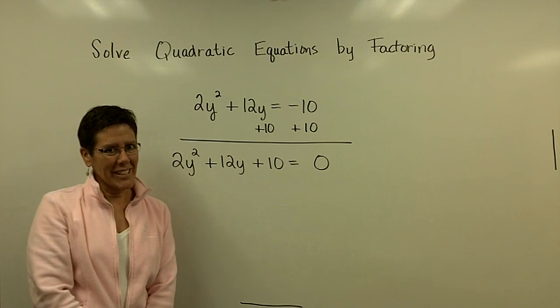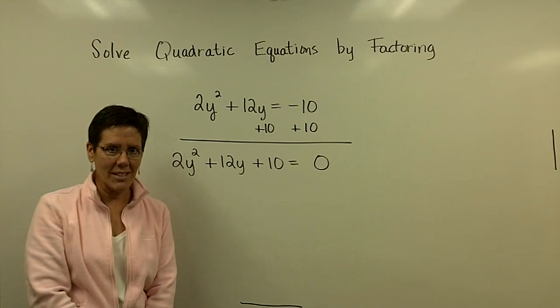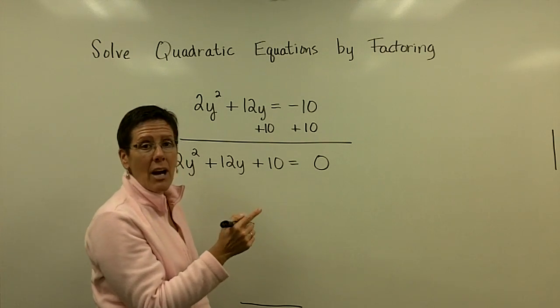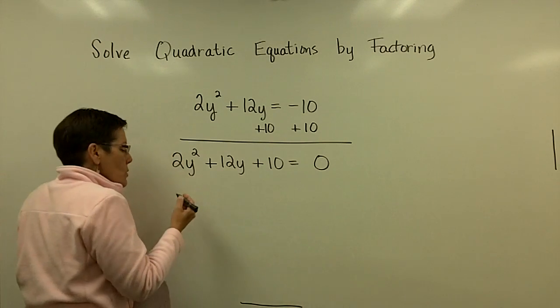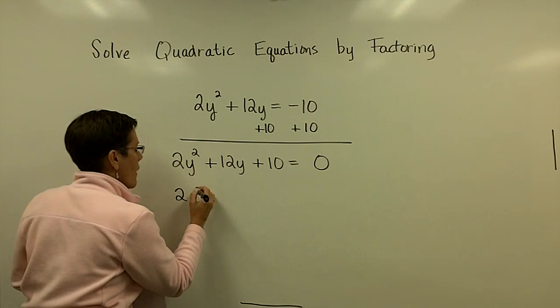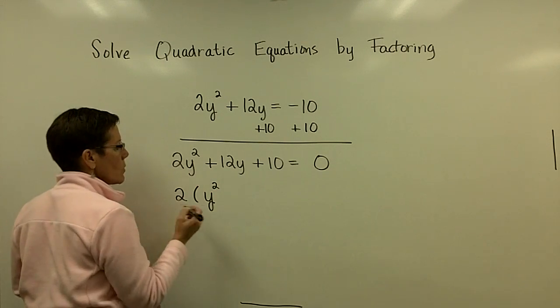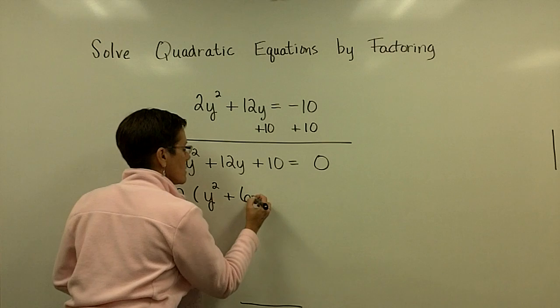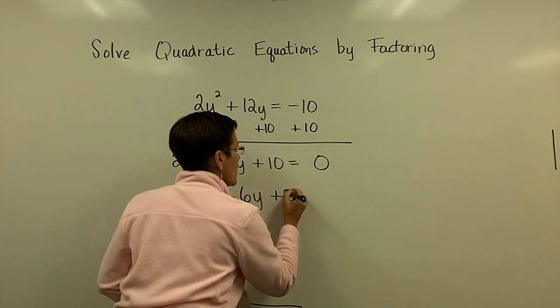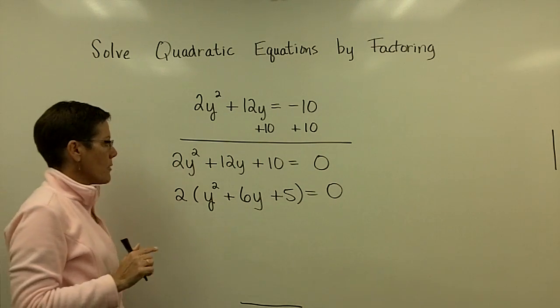Remember my broken record: the first step in factoring is to take the greatest common factor out first. This problem has a 2 that goes into every one of those, so you've got to get it out. It's not always crucial, but it sure does make your final batch of work a lot easier. So if you would just pull out the 2: 2 times y² is 2y², then I need a 6y here because 2 times 6y is 12y, and finally I need a 5 right here. So I've taken my first step and taken the 2 out first.